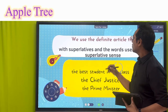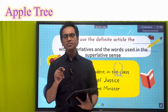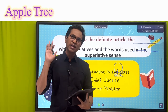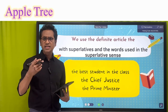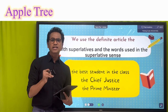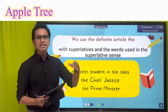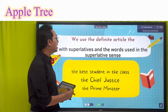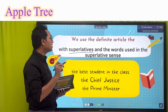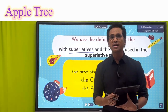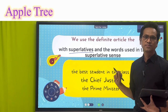The second usage: we use the definite article 'the' with superlatives and words used in the superlative sense. As we know, there are degrees of comparison. The superlative degree and words used in the superlative sense — for example, 'the best student in the class,' 'the Chief Justice,' 'the Prime Minister.'